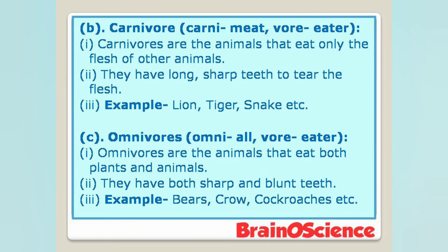B. Carnivores — 'carni' means meat, 'vore' means eater. Point 1: Carnivores are the animals that eat only the flesh of other animals. Point 2: They have long, sharp teeth to tear the flesh. Examples: lion, tiger, snake, etc.